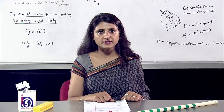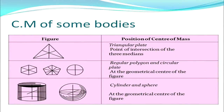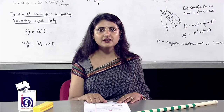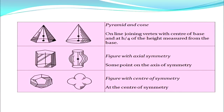Let's consider the center of mass of some bodies. For a triangular plate, the point of intersection of the three medians is the center of mass. For a circle and a polygon, the CM lies at the geometrical center of the figure. Similarly for a cylindrical shape and a sphere, the geometrical center is the center of mass. For shapes like a pyramid and cone, CM lies on the line joining the vertex with the center of the base at h/4 of the height measured from the base. For figures with axial symmetry, CM lies at some point on the axis of symmetry, and for figures with a center of symmetry, CM lies at the center of symmetry.